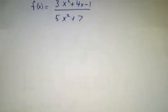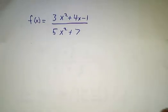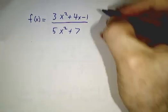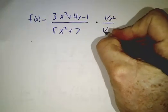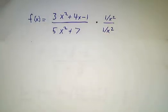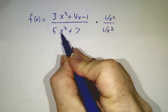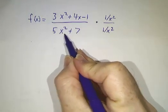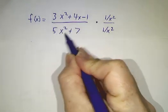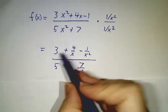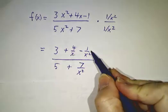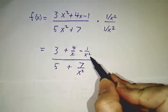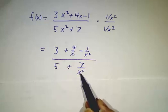Now let's apply the same trick to an example where you have the same number of powers upstairs and downstairs. We're going to multiply the top and the bottom by 1 over x squared. Why x squared? Because you have 2 powers of x downstairs — you always want to multiply by enough to get rid of all the powers of x downstairs. So 3x squared divided by x squared is 3, 4x divided by x squared is 4 over x, negative 1 over x squared is minus 1 over x squared, and the denominator becomes 5 plus 7 over x squared.